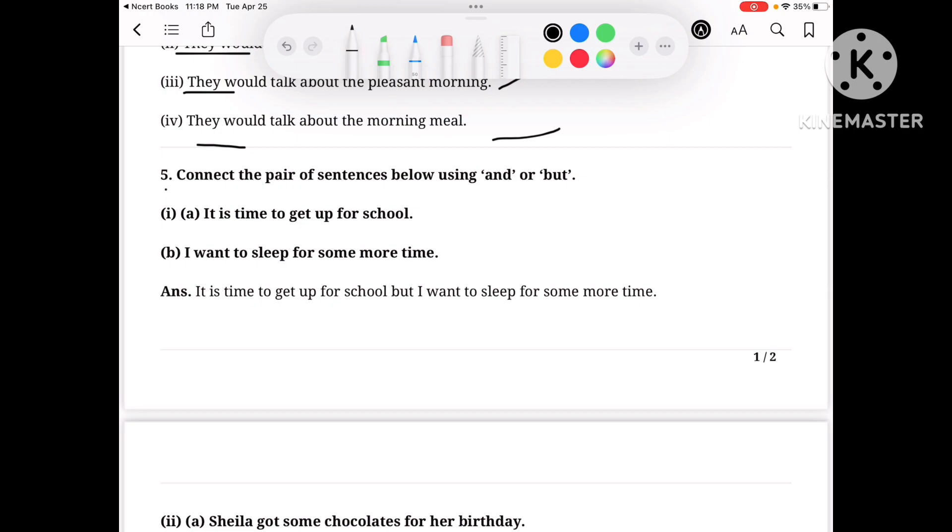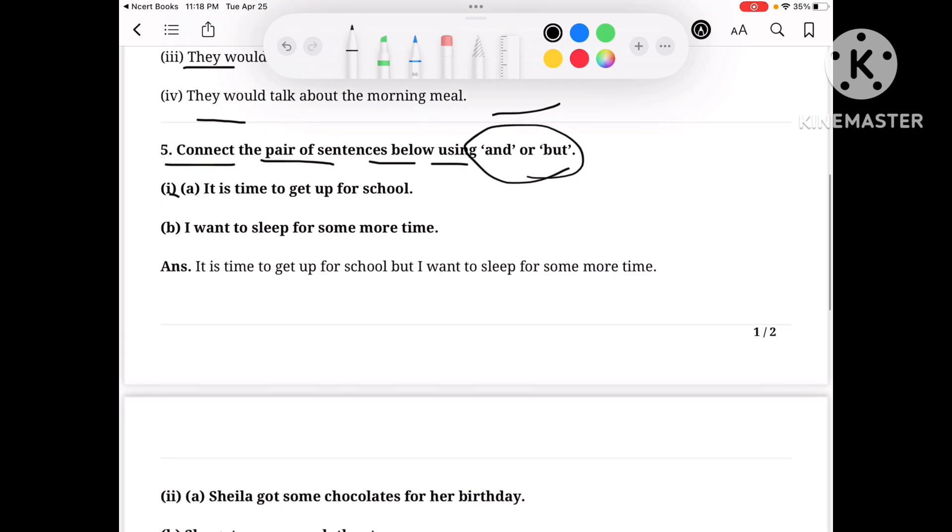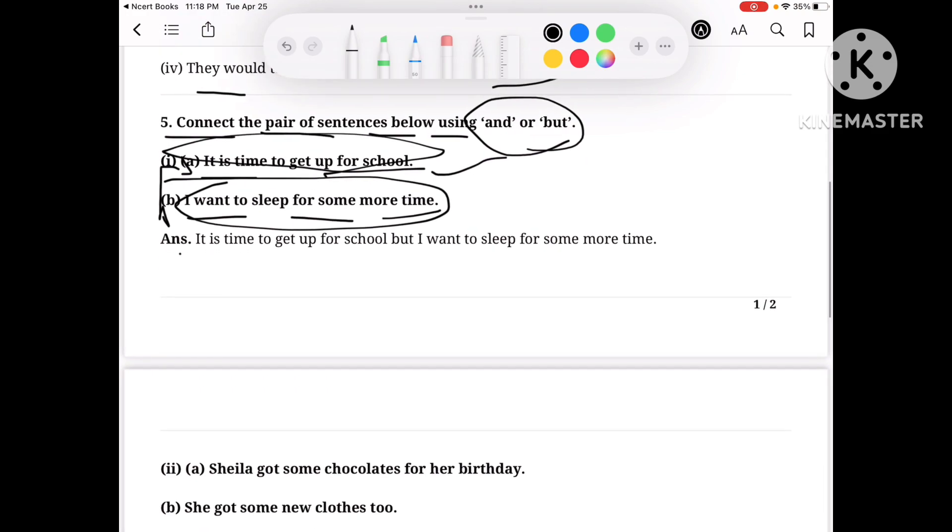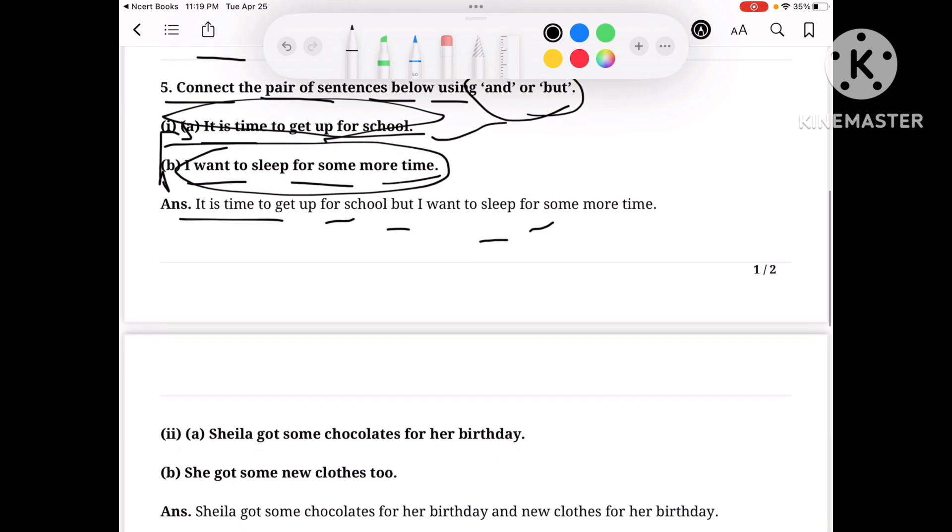Now next, connect the pair of sentences below using 'and' or 'but'. First example: It is time to get up for school. I want to sleep for some more time. Answer: It is time to get up for school, but I want to sleep for some more time.